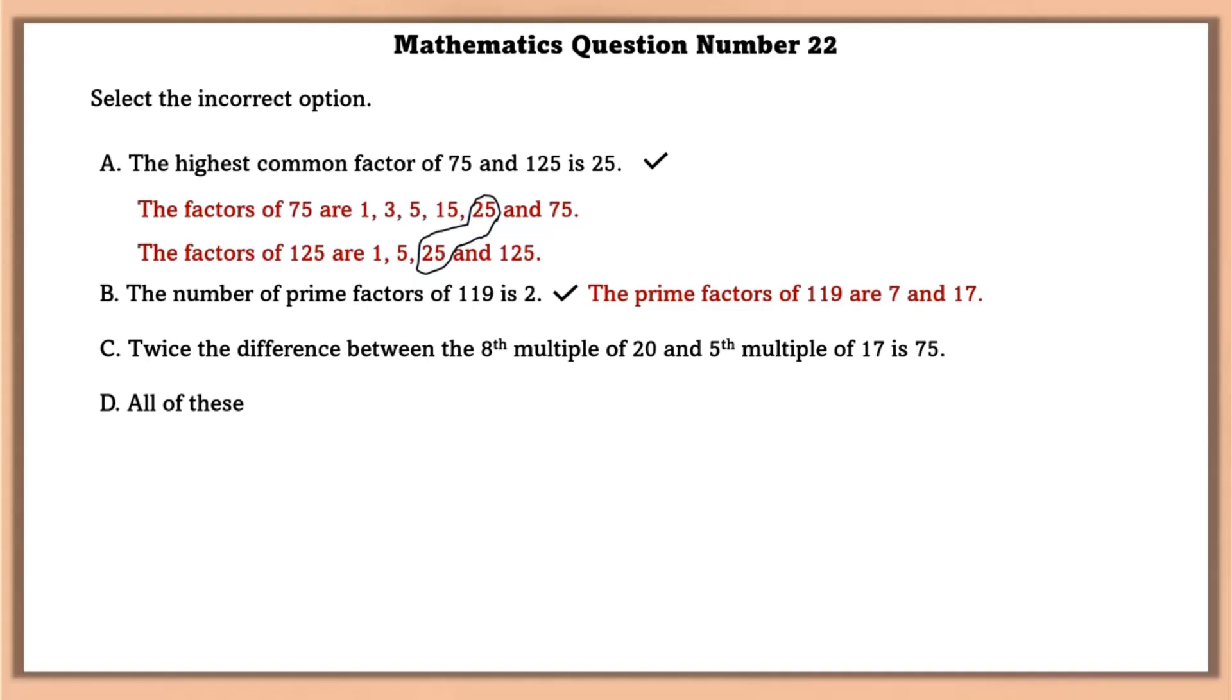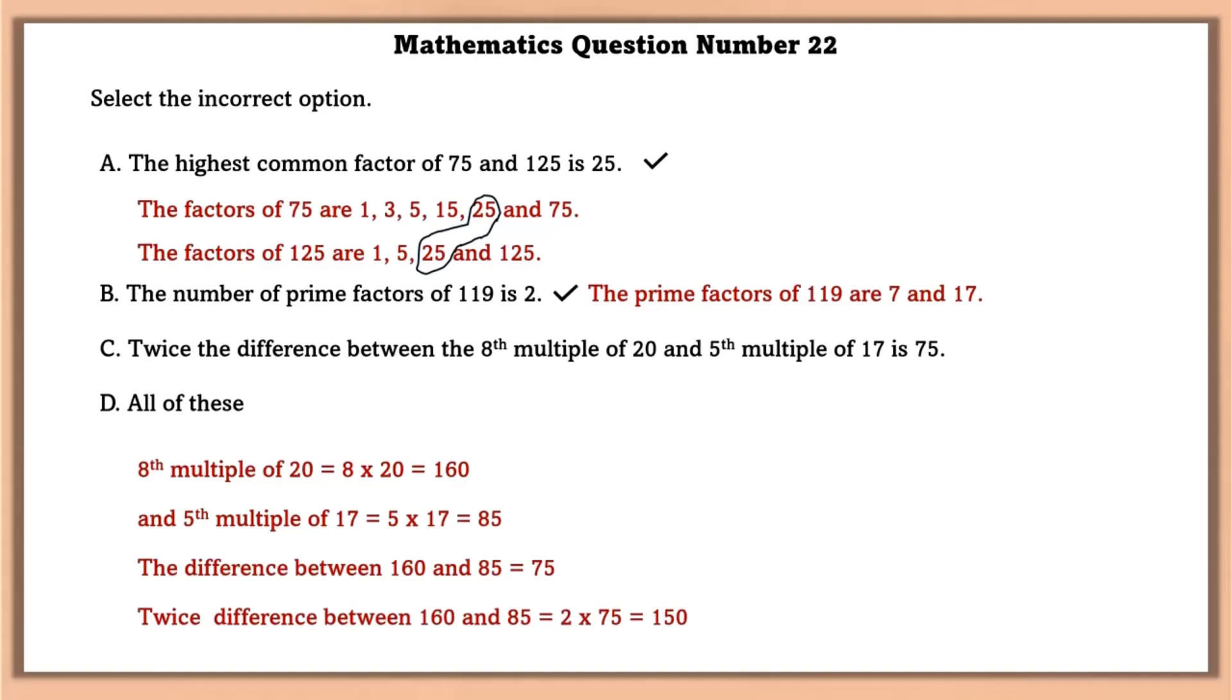Twice the difference between 8th multiple of 20 and 5th multiple of 17 is 75. 8th multiple of 20 is 160 and 5th multiple of 17 is 85. And the difference between these two is 75. So twice the difference is equal to 2 into 75 that is 150. So this is wrong.